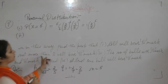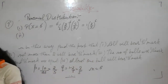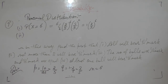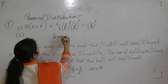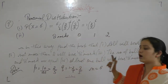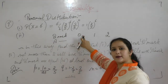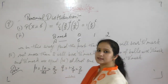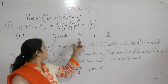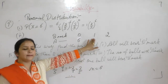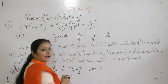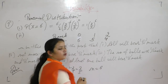Second case: not more than two will bear B mark. This means there can be either no ball, one ball, or two balls of B mark. If there are no B mark balls, all 6 are A mark. If there is 1 ball of B mark, then 5 balls are A mark. If 2 balls are B mark, then 4 balls are A mark.